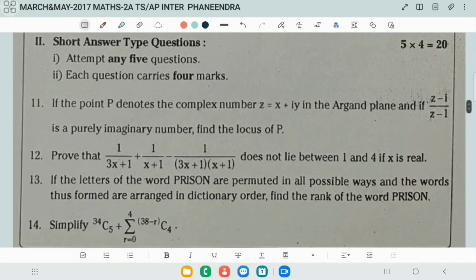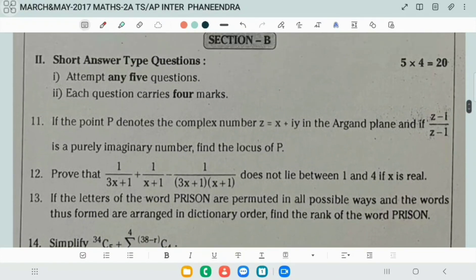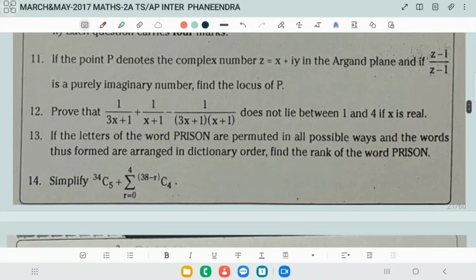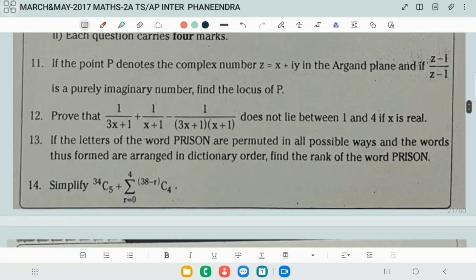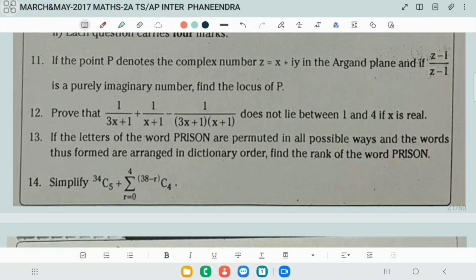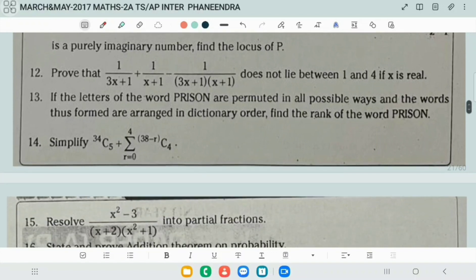Next, Section B. We'll enter into the point P denotes the complex number Z equals x plus iy in the Argand plane, and if Z minus i, Z minus 1 is purely imaginary number, find the locus of P. Prove that 1 by 3x plus 1 plus 1 by x plus 1 minus 1 by 3x plus 1, x plus 1, x plus 1 does not lie between 1 and 4 if x is real.